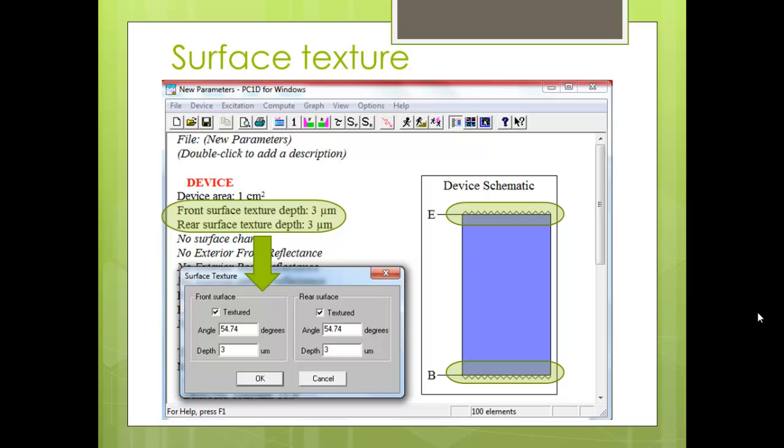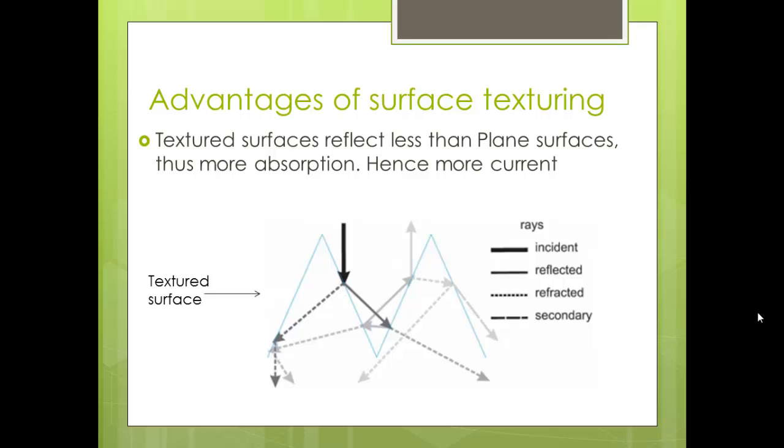Now what zigzag surface do? It basically increases your reflection incidents so as to absorb multiple reflections. As you can see in this figure, the blue line is the textured surface and you can see the black ray coming in.